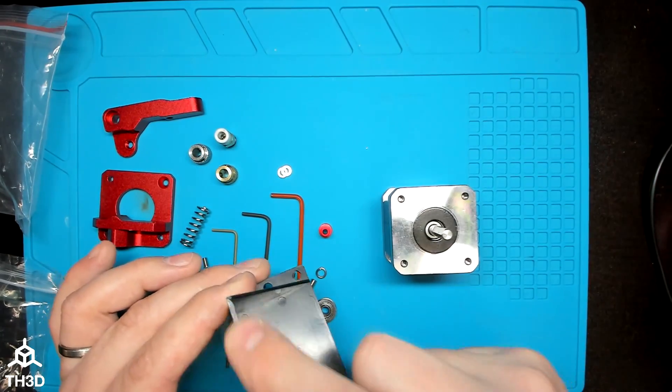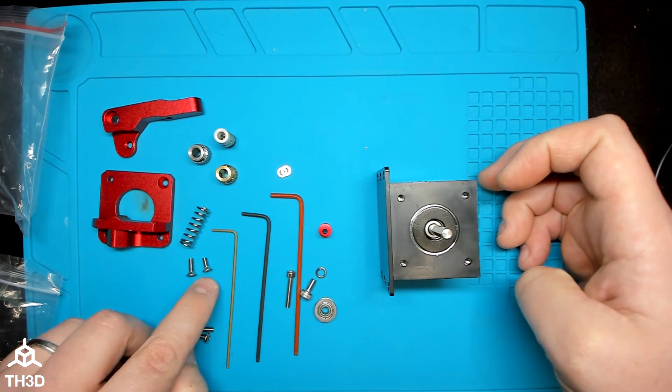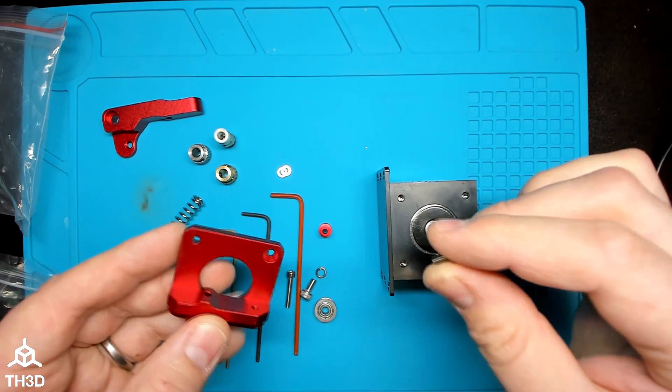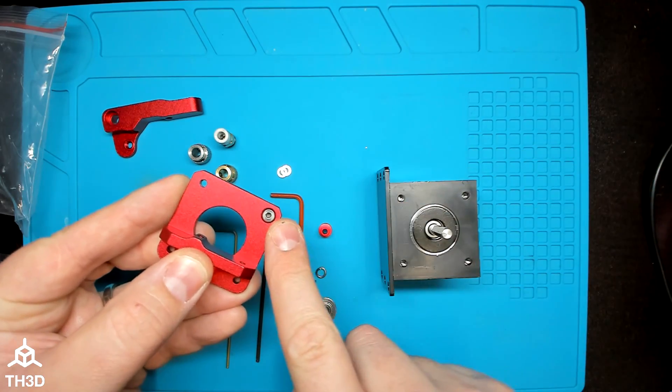Depending on the thickness of your mounting bracket will determine which one of these screws you'll use. In this case, and in most printers cases, we'll use the shorter one, and this will go in the corner right here.